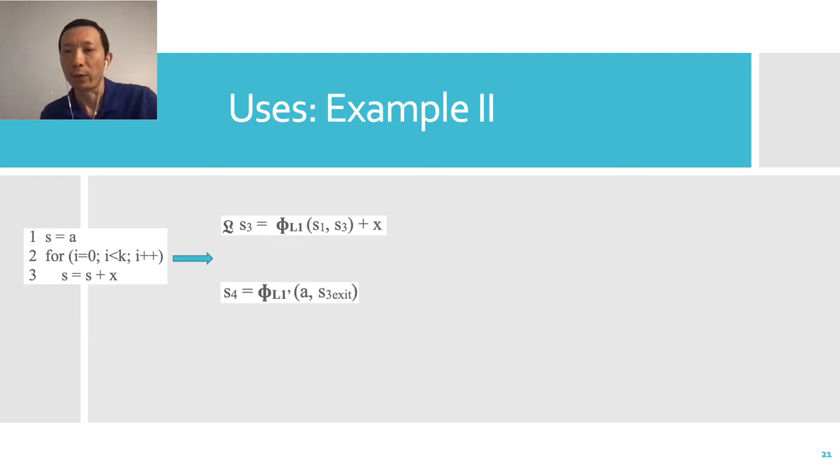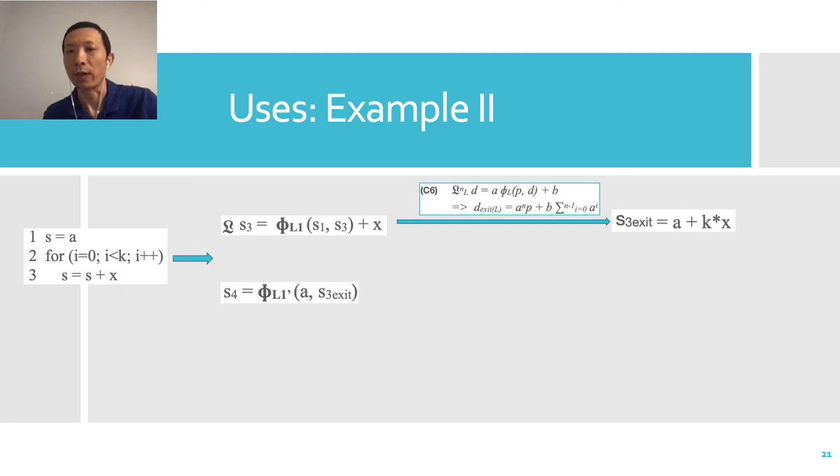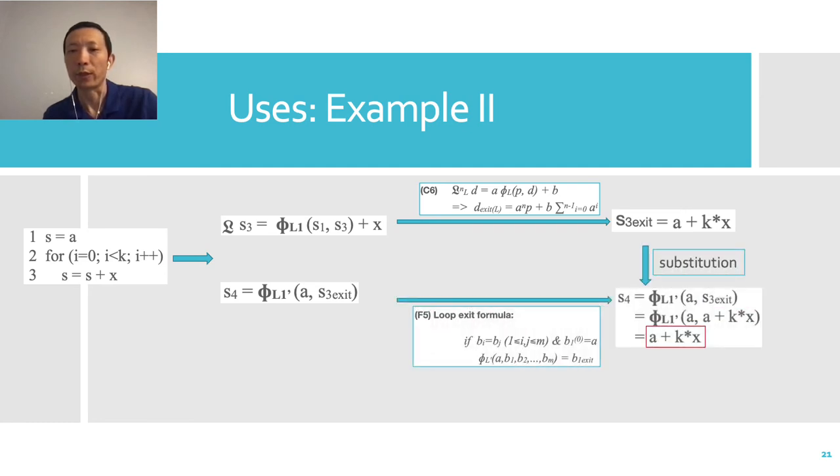For this loop example, with corollary C6, we can remove the loop notation, get this simple expression for the value of S3 at the exit of loop. And then using the formula F5, we can get the value of S4. Differentiation over x will give the final derivative k.